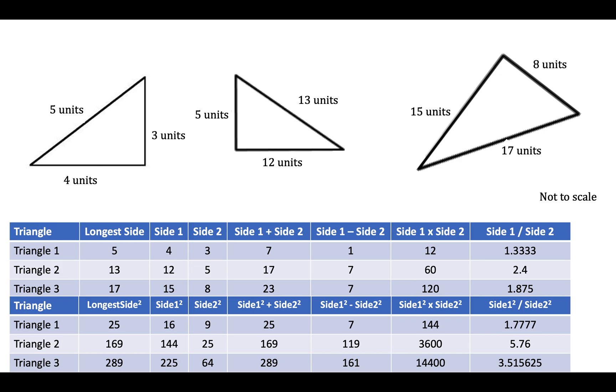Now we might have had more success here in trying to find some sort of relationship. Hopefully you've noticed already that the longest side squared equals side one squared plus side two squared.